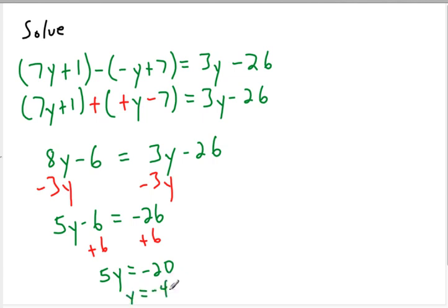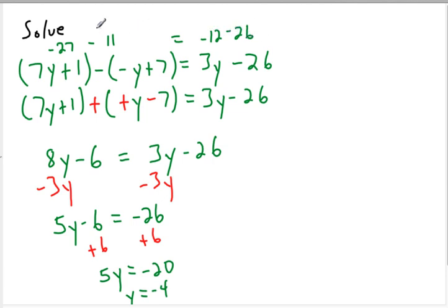We get 5y minus 6 equals negative 26. Adding 6 to both sides leaves 5y equals negative 20 — don't forget your positive and negative adding rules. Dividing both sides by 5 gives y equals negative 4. To verify, plug in negative 4: negative 28 plus 1 is negative 27, and the opposite of negative 4 is 4, so 4 plus 7 is 11 — giving negative 27 minus 11, which is negative 38. On the right side, negative 12 minus 26 is also negative 38. So we are confident that negative 4 is our correct answer. Thanks for watching.